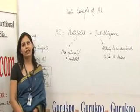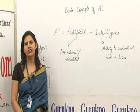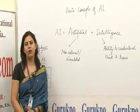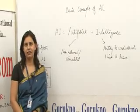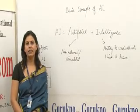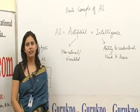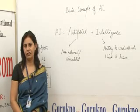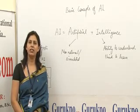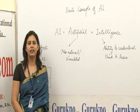We can see that AI, that is Artificial Intelligence, is a combination of two words: Artificial plus Intelligence. Artificial means non-natural or simulated. Intelligence is the ability to understand, think and learn.